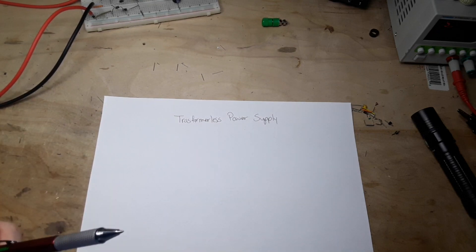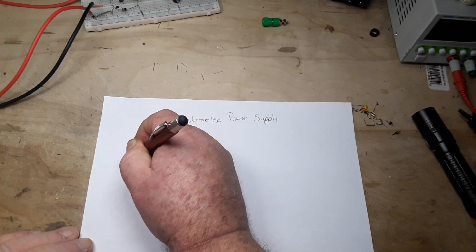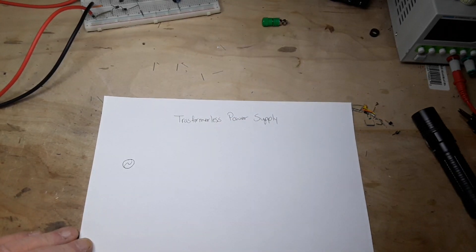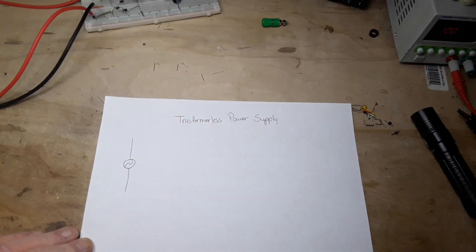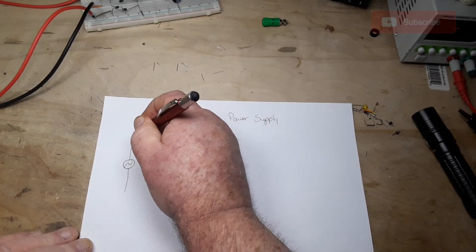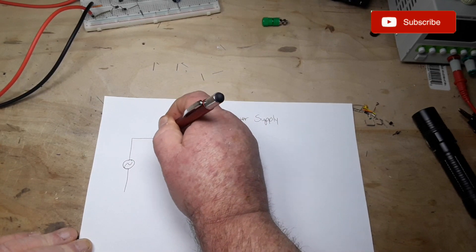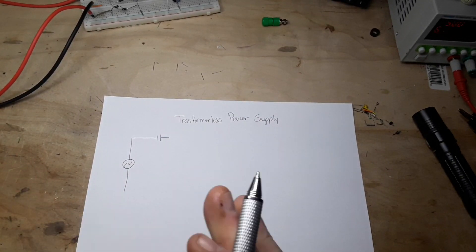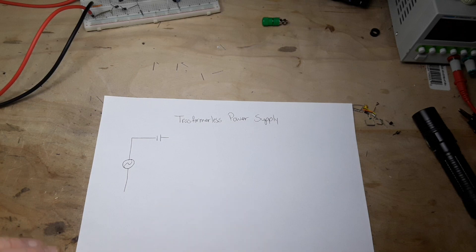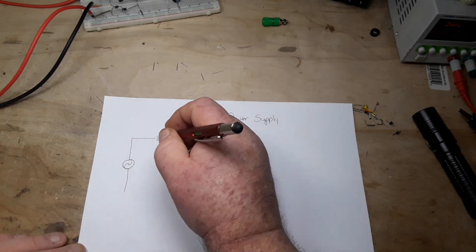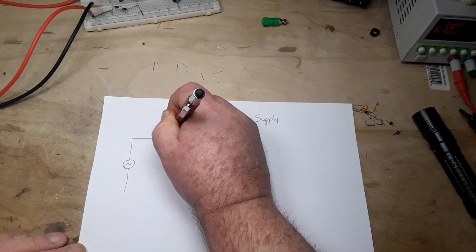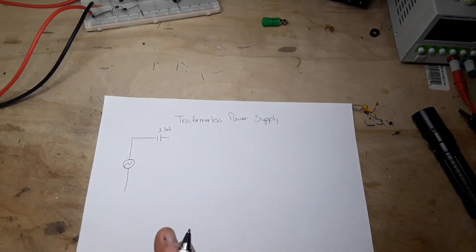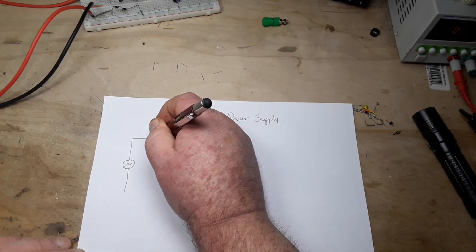If we think, over here we have our AC coming in. Remember, AC there's no positive and negative, it's alternating. We're going to come in from one side to a capacitor. Now this capacitor, for safety reasons, should be an X2 type capacitor. I don't have any, so use it at your own risk. We're going to use a 3.3 microfarad capacitor and that's going to be our dropper. It's just going to let a small piece of the AC through on each cycle.